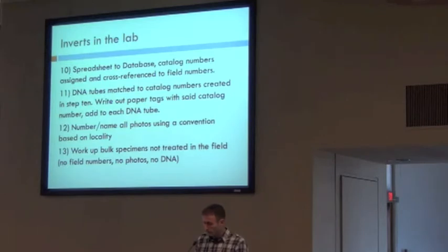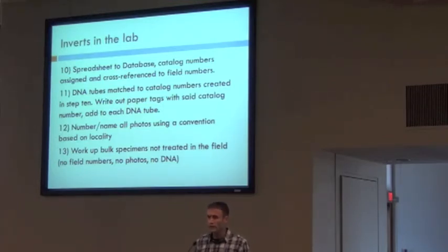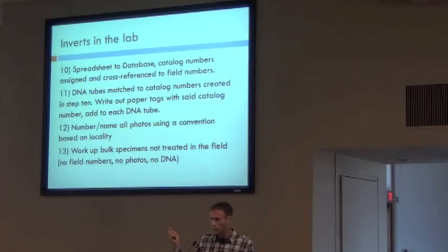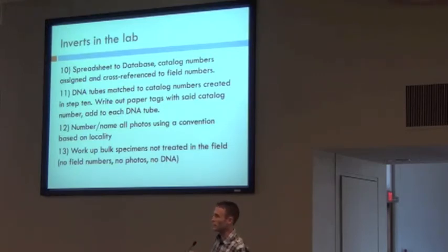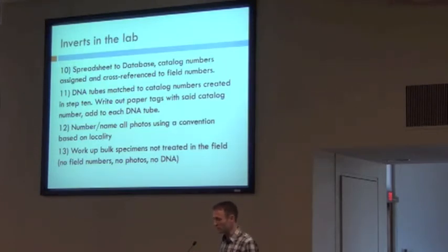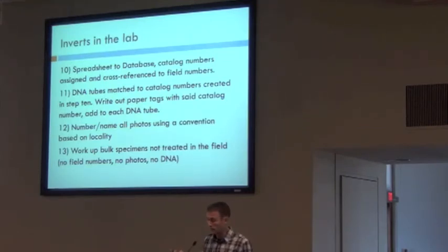The DNA tubes, which still have only a field number in them, must then be matched to the catalog number. They find the DNA tubes with the same field number as what they have in the spreadsheet, look at what catalog number was just assigned in the lab, write the catalog number on a piece of paper, and put it in the tissue bottle. This might be more cumbersome than tissue sampling in the field for fish, but this process works well.